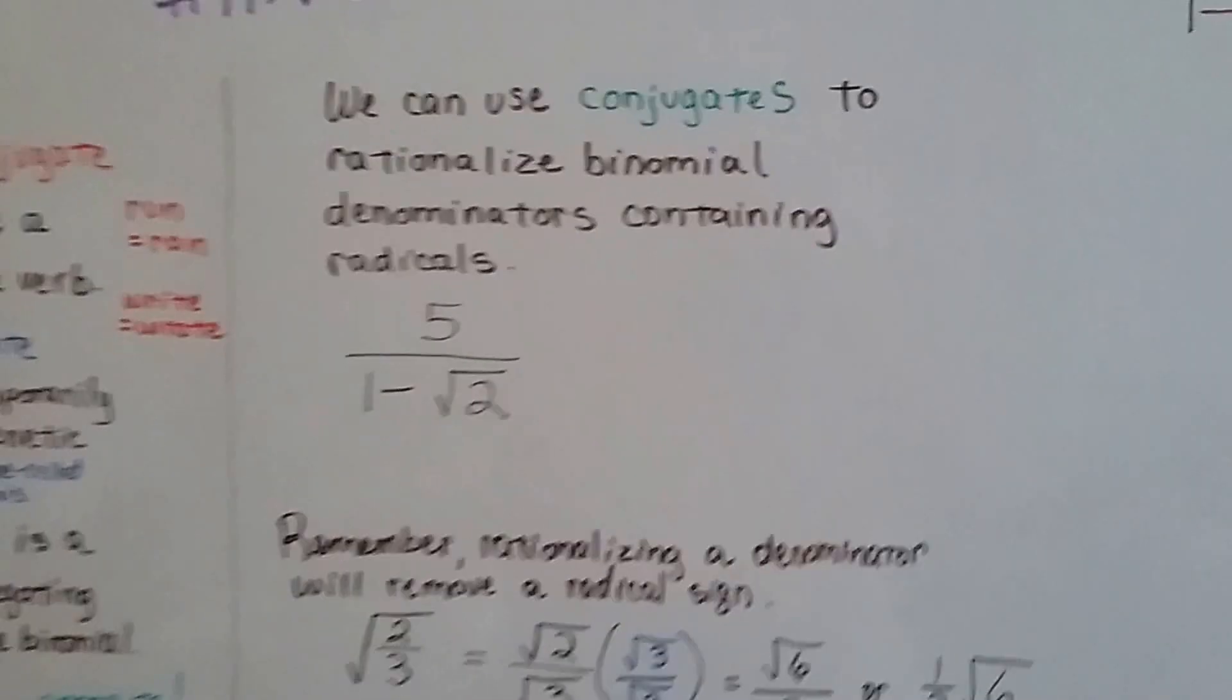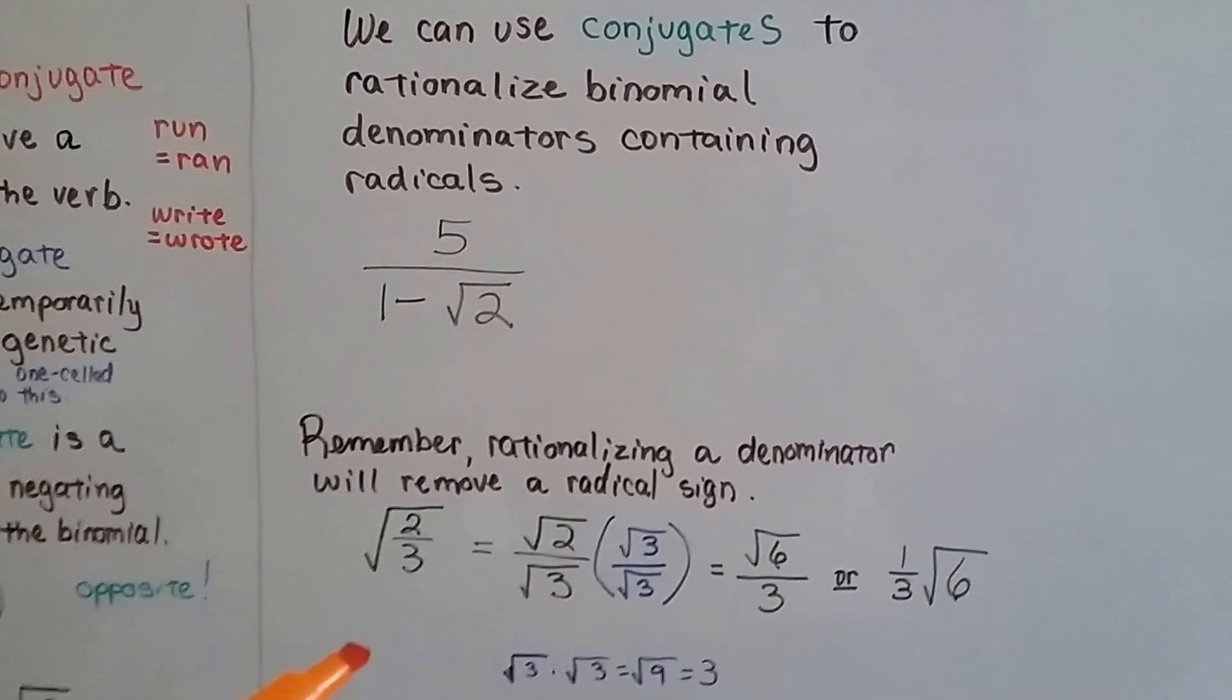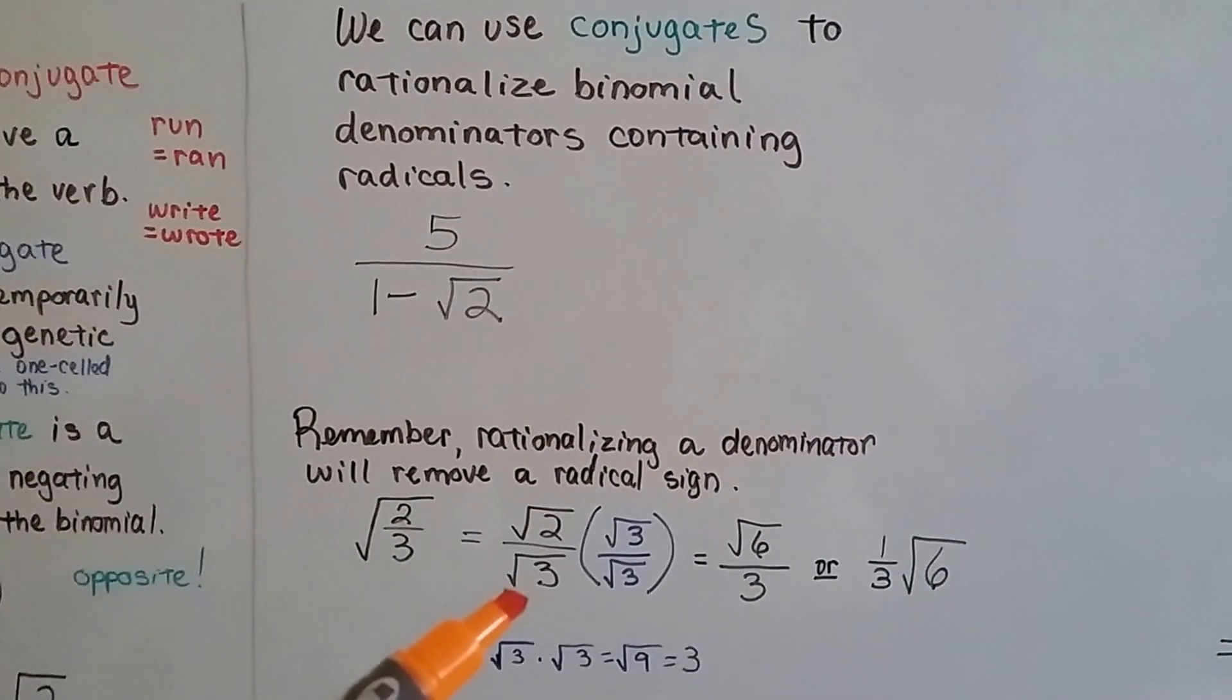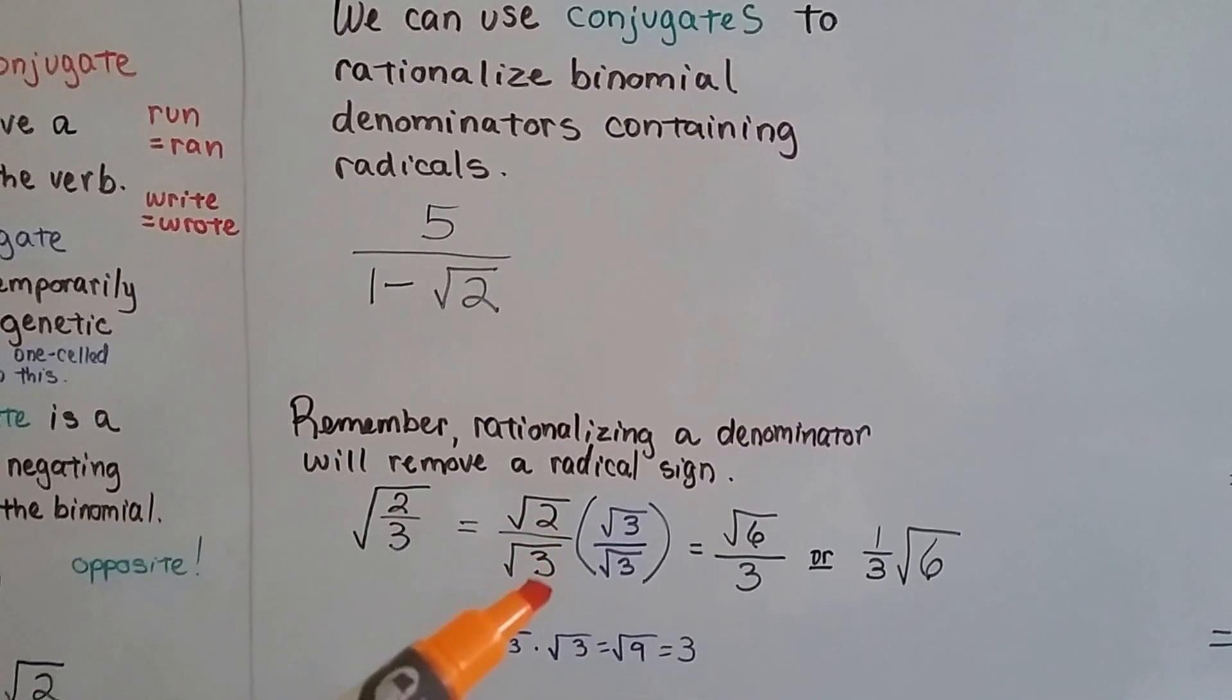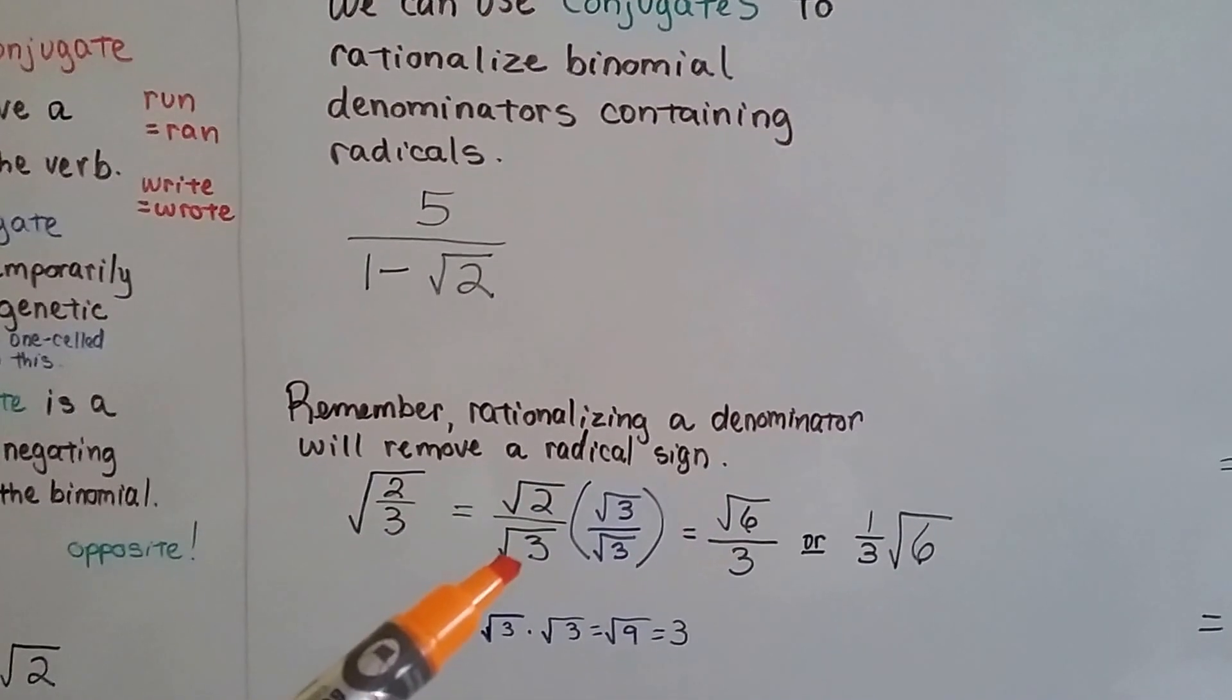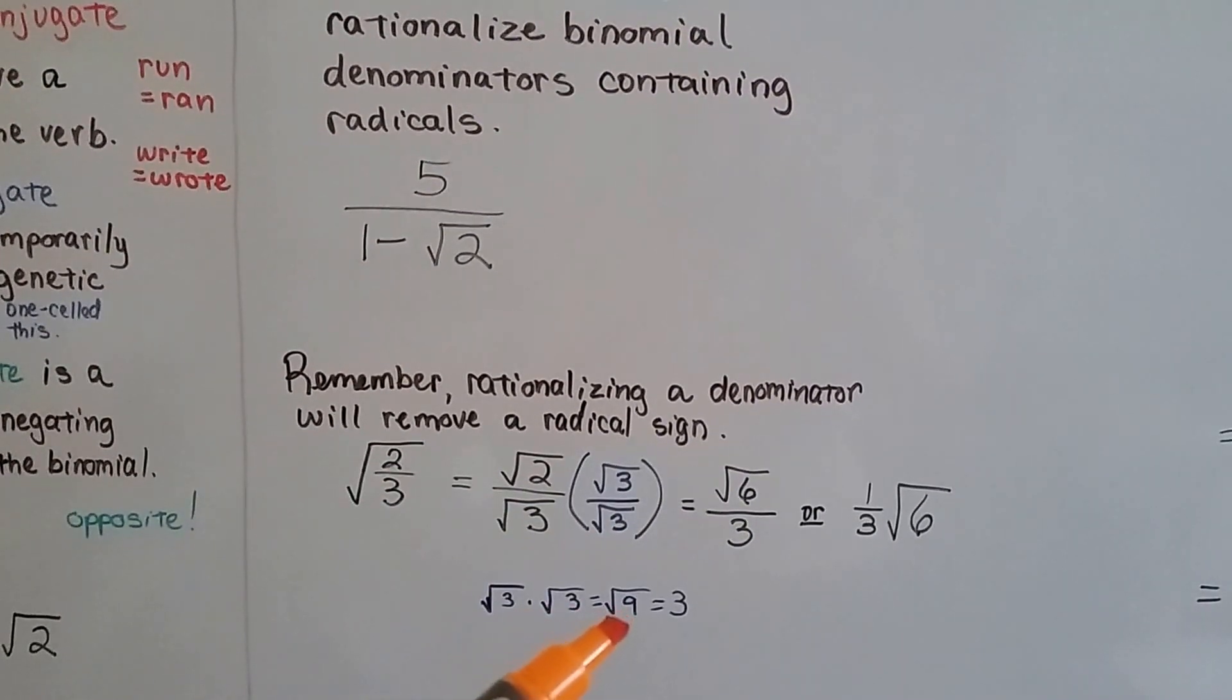So you remember rationalizing denominators. We did this just in the previous videos. If we have the square root of 2 thirds, we can multiply the numerator and denominator by this denominator over denominator. And when we do square root of 3 times square root of 3, we get square root of 9.